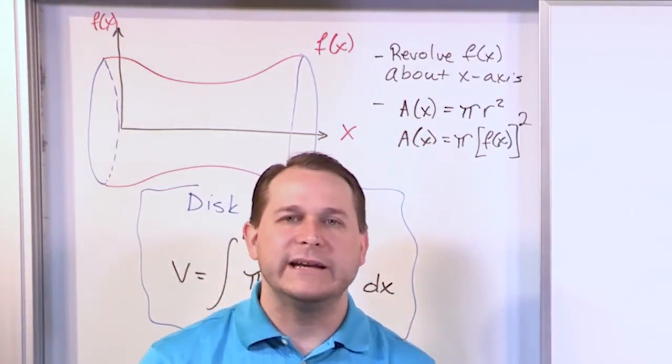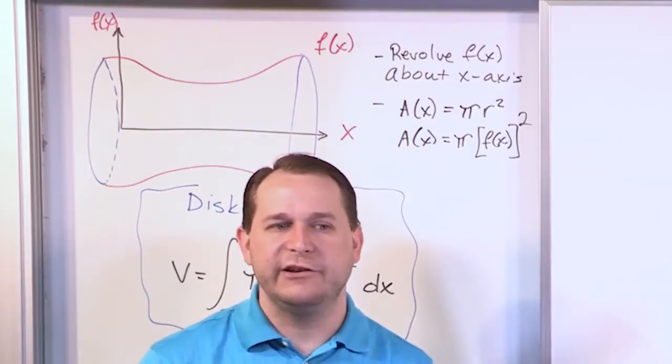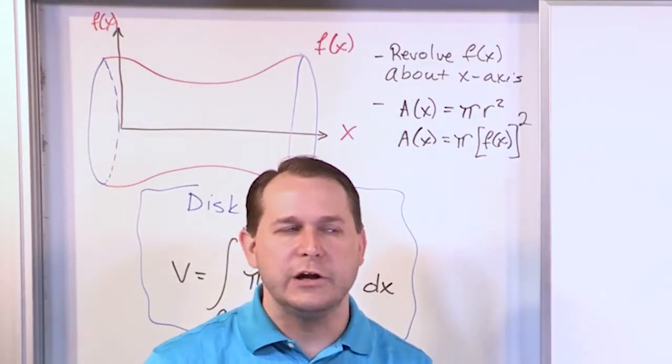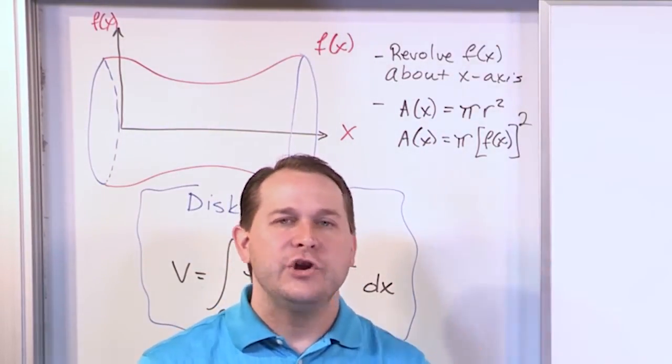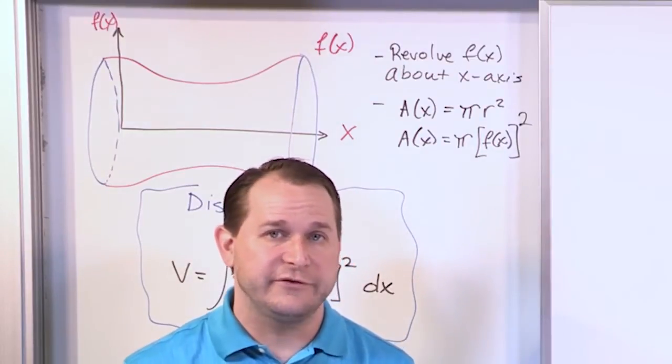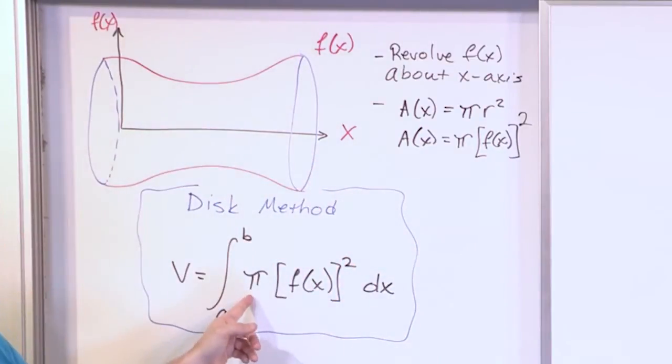So the disk method is really just what we learned in the last section. It's just a very specific application. When you revolve your object around the x-axis, you're always going to get cross sections that are going to be circles. So you're always going to have cross section areas that are going to be pi times f of x squared.